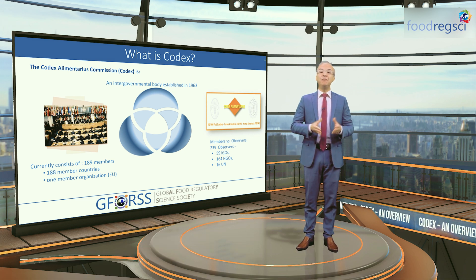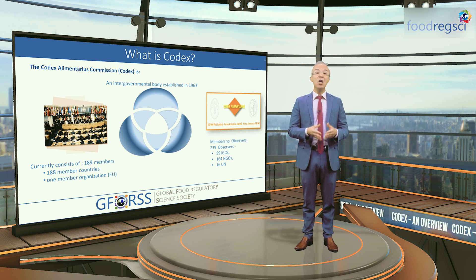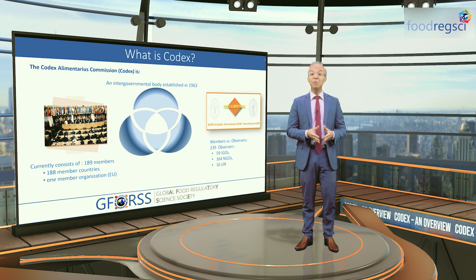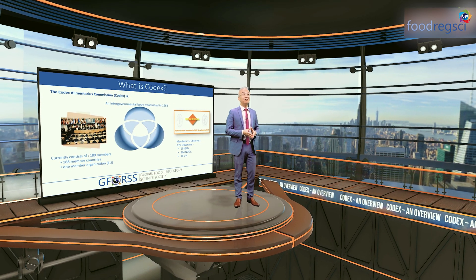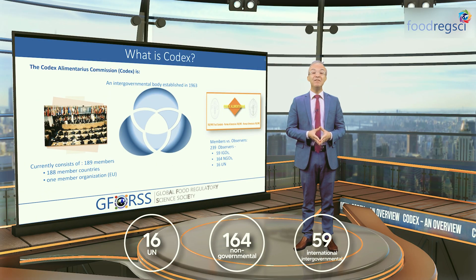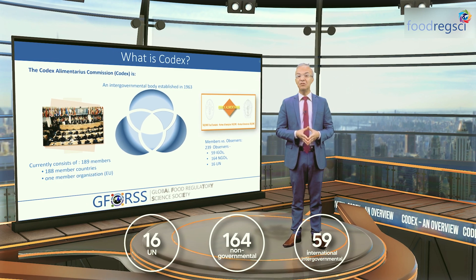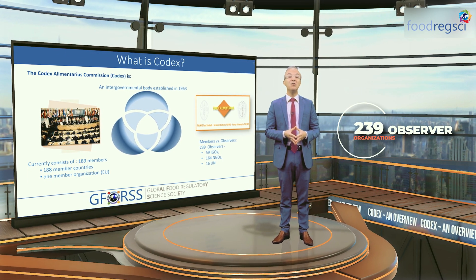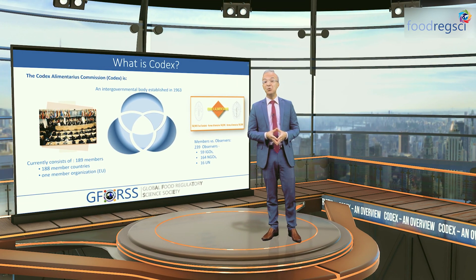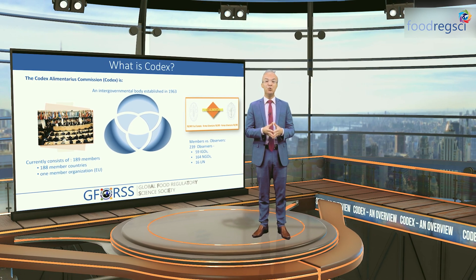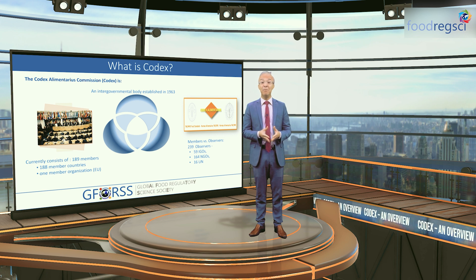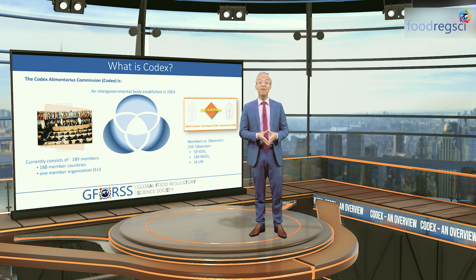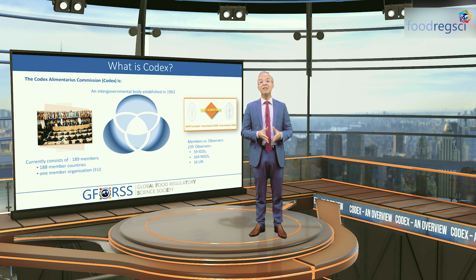Considering the need to involve stakeholders in food decision-making, including international food standards setting, Codex also involves a significant number of observer organizations representing stakeholders for whom the development of food standards would have an impact. Codex includes 16 UN organizations, 164 non-governmental organizations, and 59 international intergovernmental organizations, for a total of 239 observer organizations. This number continues to increase every year. Observers have the same prerogatives as members — with the ability to comment on proposed international food standards — with the only limitation being their inability to vote on a given Codex text when that option is resorted to.